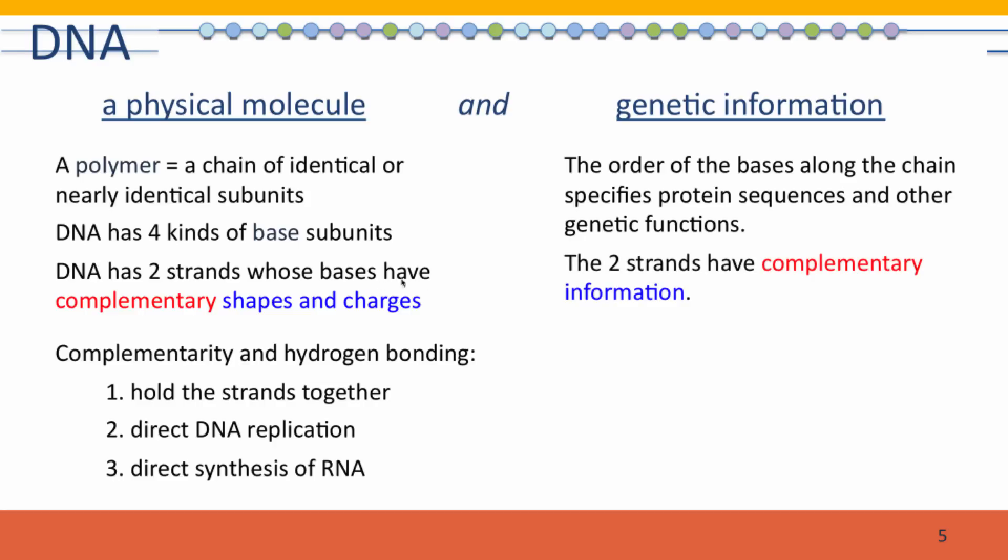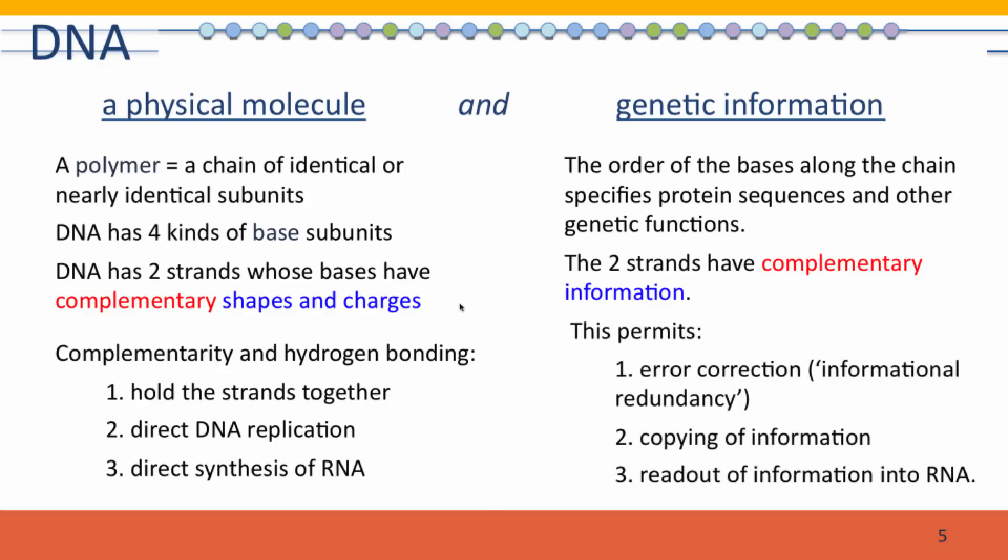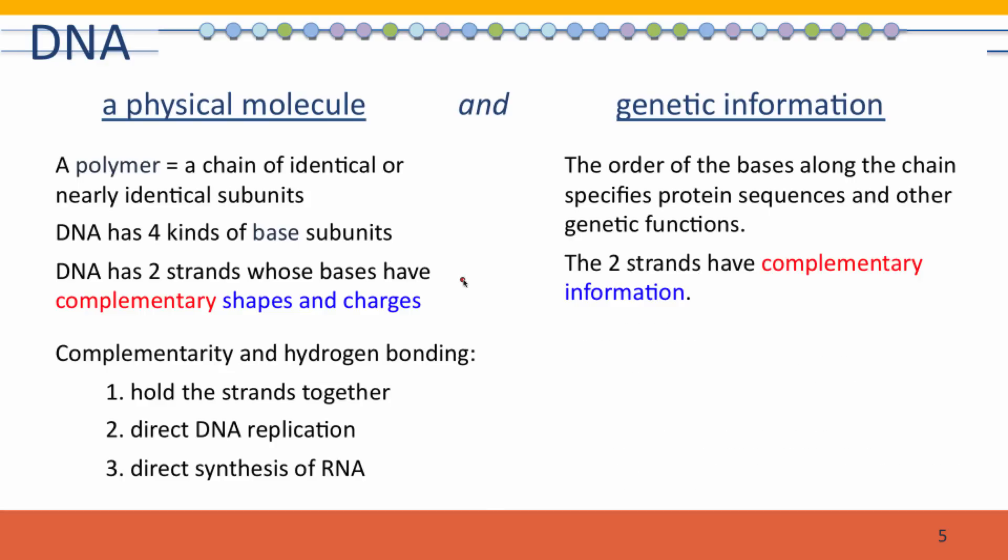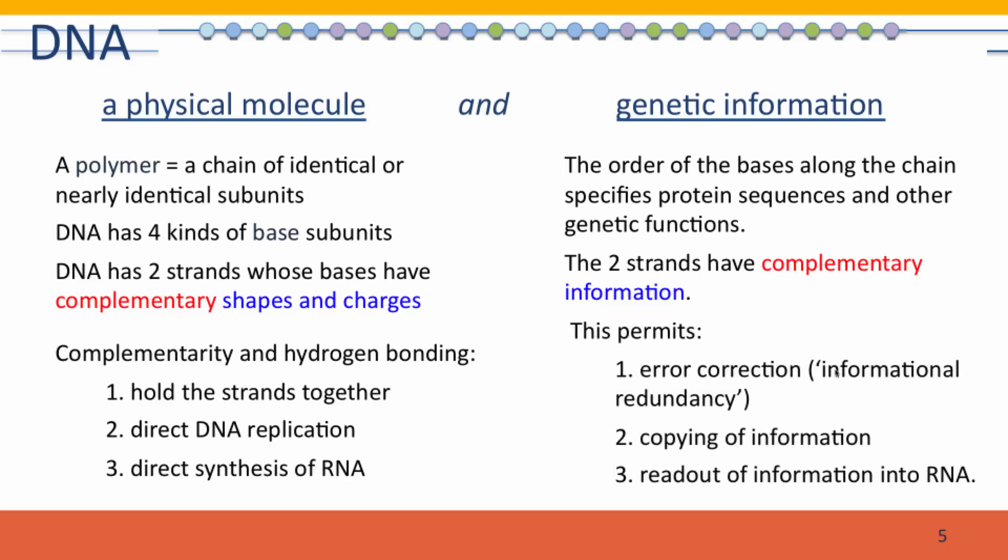So, the two strands have complementary shapes and charges. Thus, the two strands have complementary information as well, the information being the sequence of the bases. Because of this, it's possible to do error correction. If one strand is wrong, the other strand provides the information to correct the mistakes. This is called informational redundancy.